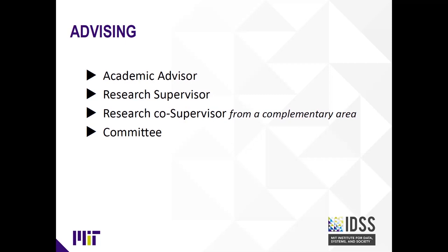We also encourage another supervisor from a complementary area. For instance, a student who found a supervisor in computer science working on the spread of misinformation in social networks might also look for additional advising from a political scientist or an economist. Students also form a doctoral committee with an additional one to three experts beyond their supervisors—these could be faculty, researchers from different schools, or PhDs doing work in the public or private sector.